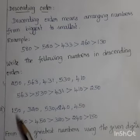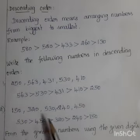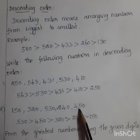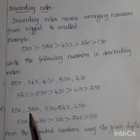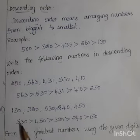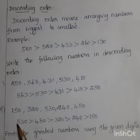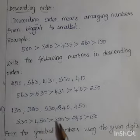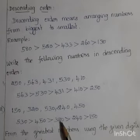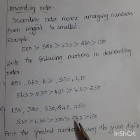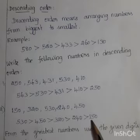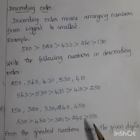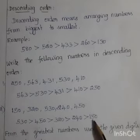150, 320, 530, 240, 450. Students, which is the biggest number? 530. So first we write: 530 is greater than 450, greater than 320, greater than 240, greater than 150. 530 is the biggest number and 150 is the smallest number.